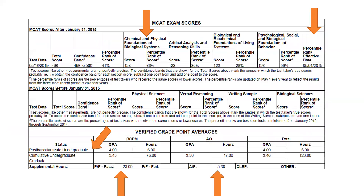We also see in the summary section scores and percentile ranks for the MCAT, the test dates, and how many credits you've taken pass-fail. If you elected pass-fail courses because of the pandemic, it just shows up here under supplemental hours — how many credits you took pass-fail and passed, and how many you failed. They do not get calculated into your GPA; they're just reported as number of credits failed.